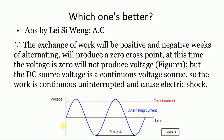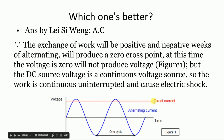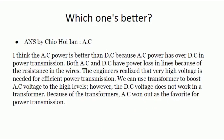Analyzing Figure 1 comparing AC and DC: when AC is working, it alternates between positive and negative half-cycles, producing a zero-crossing point. At the moment the voltage is zero, there is no voltage and therefore no danger. But the DC source voltage is a continuous voltage source that works continuously and may cause electric shock. AC power is better than DC in power transmission, and both AC and DC have power loss due to resistance in the lines.